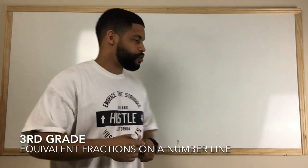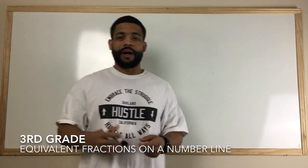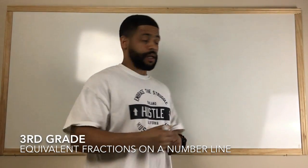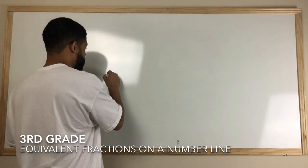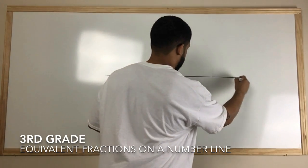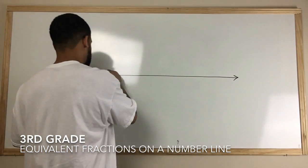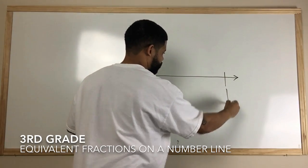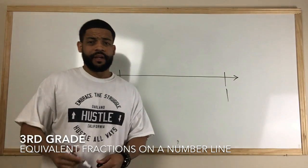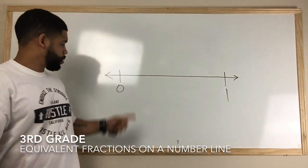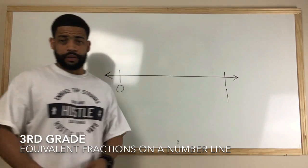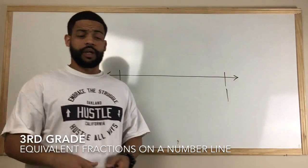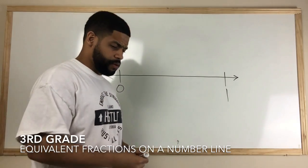So what we want to do is talk about how to show equivalent fractions on a number line. We're going to draw our number line, and when representing numbers on a number line in third grade math, all of the number lines are only going to go from zero to one, because this represents one whole.